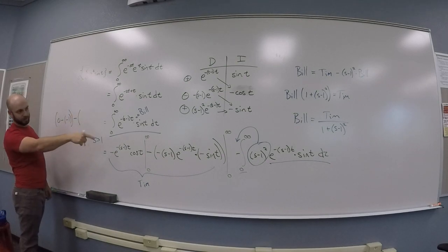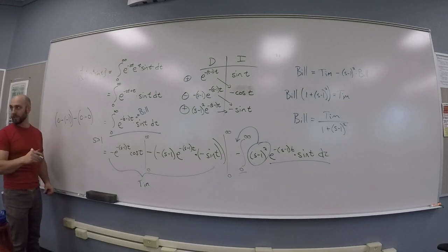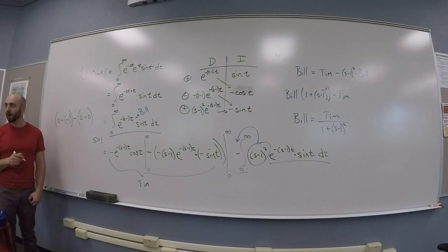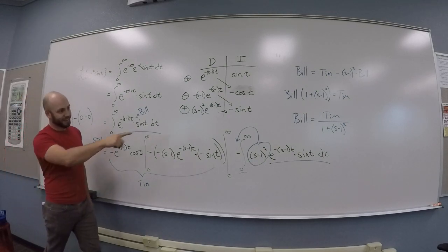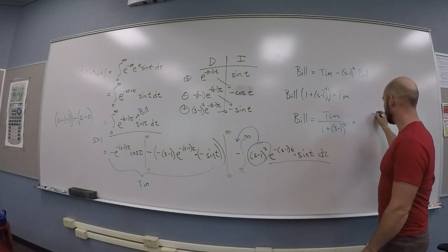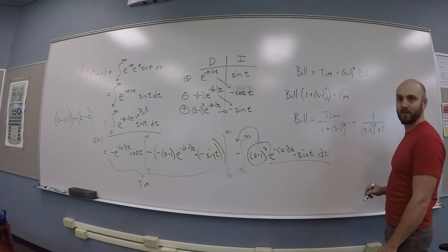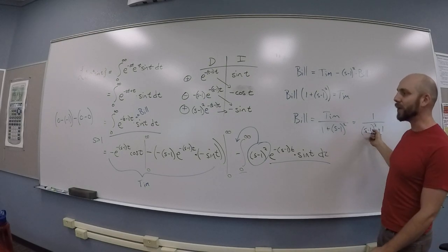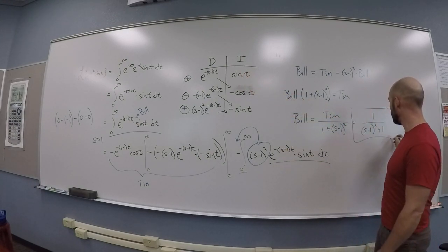So, if you do that, evaluate it at infinity, you get 0. And then evaluate it at 0, you get 0. Because it's got a sine T in it. You guys see that? So, Tim was just a really long-winded way of writing 1. In the end, what I found is I found Bill is 1 over S minus 1 squared plus 1. And Bill was actually just the Laplace transform I was looking for. So, this is honest to God the answer.